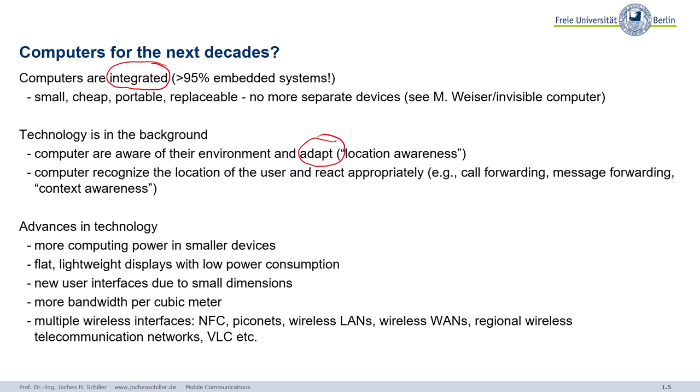They should have situation awareness, context awareness, location awareness. The computers recognize the location and can react appropriately. We all know this from call forwarding. We will see how cell phone systems do this because they actually have to forward a call or forward data.